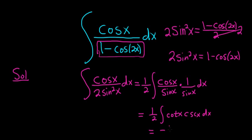So here we have to have a negative to make it work. So this will be negative 1 half cosecant x plus c.